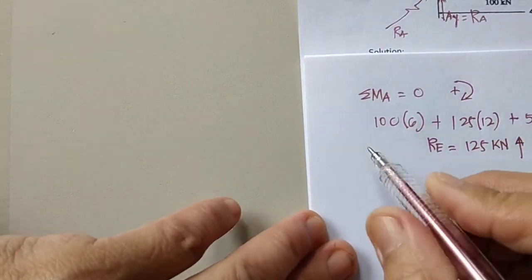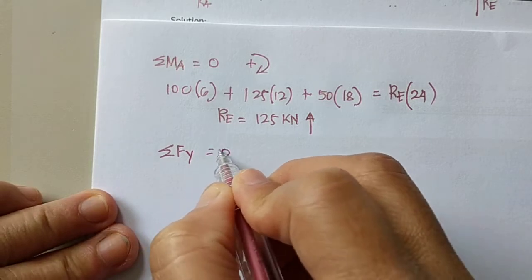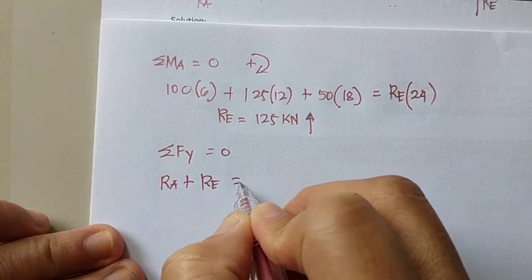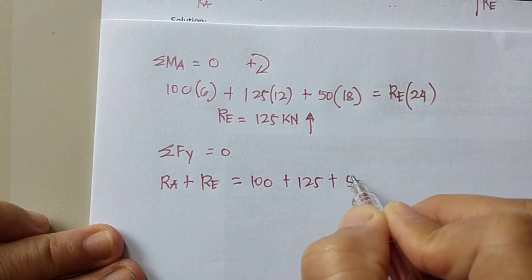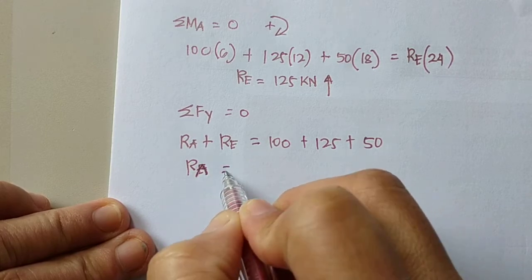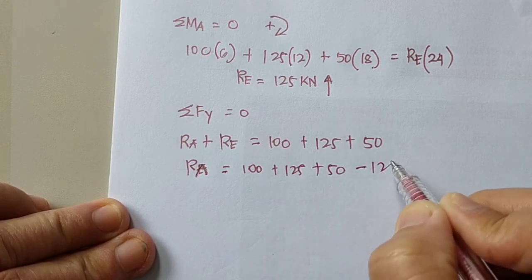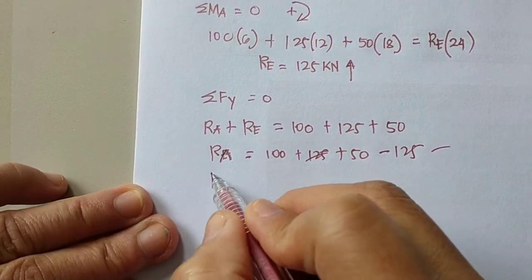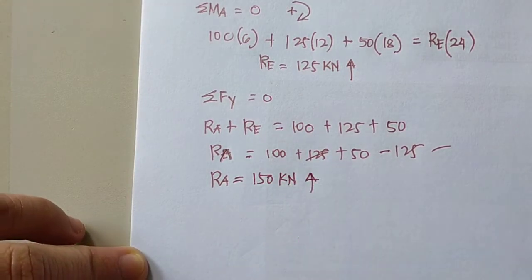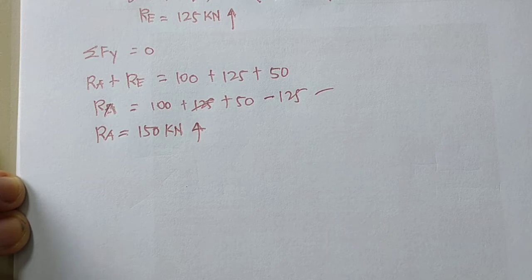RE is 125 kilonewtons going up. For RA, using summation of forces along the y-axis equals zero: RA + RE = 100 + 125 + 50. Since RE = 125, RA = 100 + 125 + 50 − 125 = 150 kilonewtons going up. I will now start at joint A to find the forces in members AF and AB.